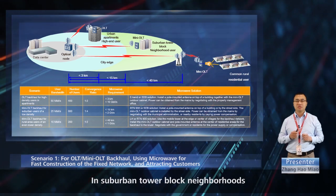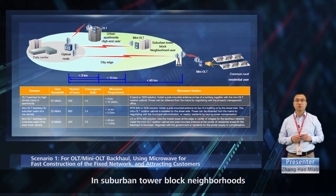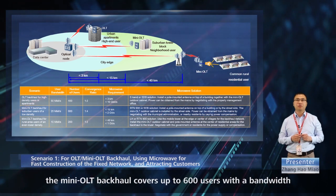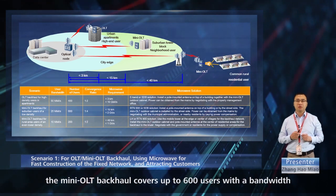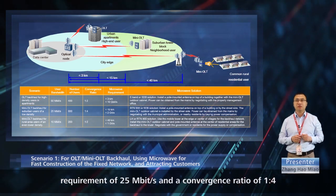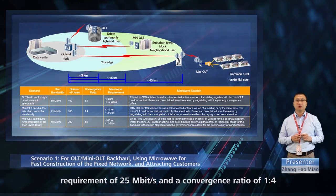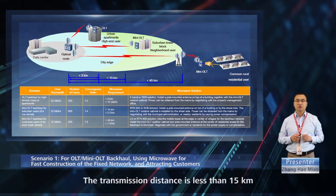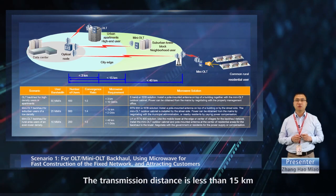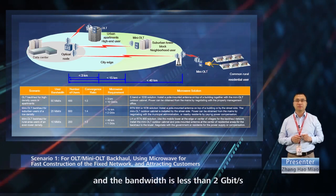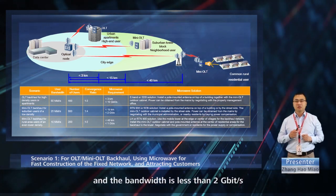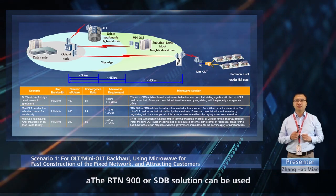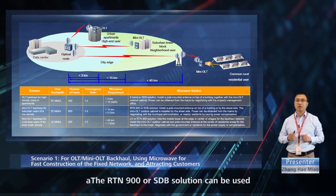In suburban tower block neighborhoods, the mini-OLT backhaul covers up to 600 users with a bandwidth requirement of 25 megabits per second and a convergence ratio of 1 to 4. The transmission distance is less than 15 kilometers and the bandwidth is less than 2 gigabits per second. The RTN-900 or SDB solution can be used.